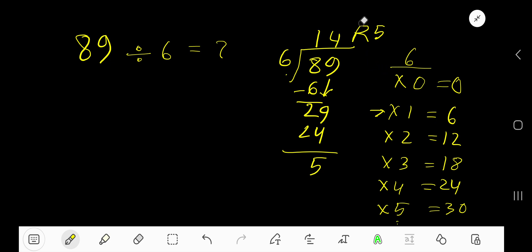If you want to write your answer in decimal form, then convert this number into a decimal number. Take a decimal, then add any number of zeros. Bring down the first 0, so now you have 50.